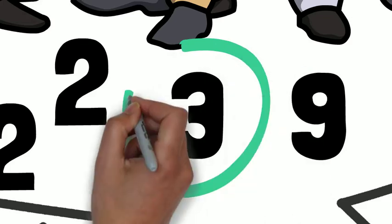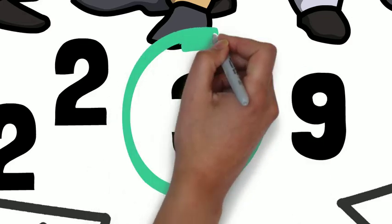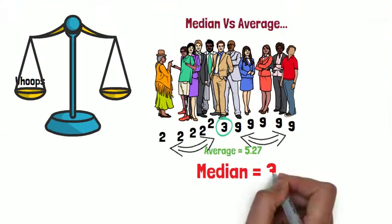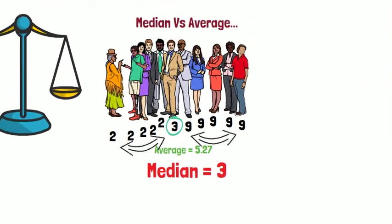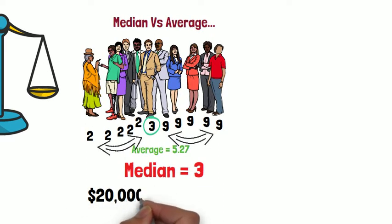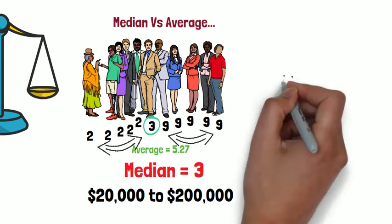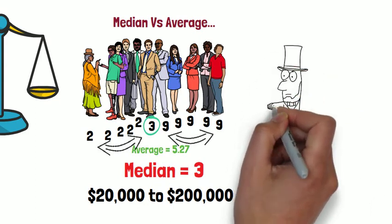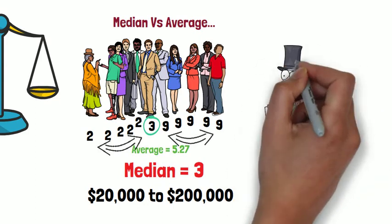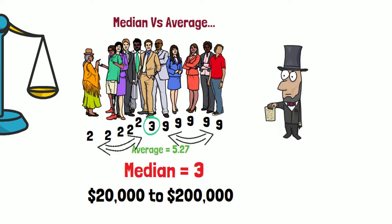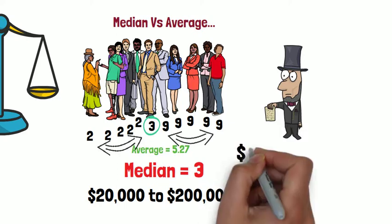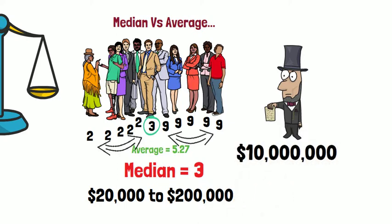The reason why median is much better than the average is that 99% of us will be earning between twenty thousand and two hundred thousand dollars, but less than one percent of people earn tens of millions of dollars, and that really skews the average. The median gives a realistic, fair figure you can actually compare yourself to. Anyway, here are the numbers.